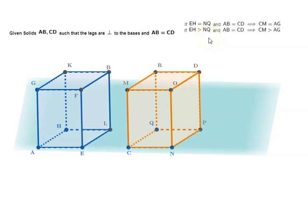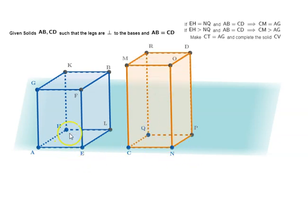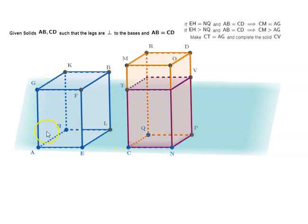Now if EH is greater than NQ and AB equals CD, then CM is greater than AG. In this case, we make CT equal to AG — constructing another solid on base NQ whose height equals the height of AB. So CT is equal to AG and AB equals CD. Now solid AB is to solid CV as EH is to NQ, since solids are proportional to their bases.